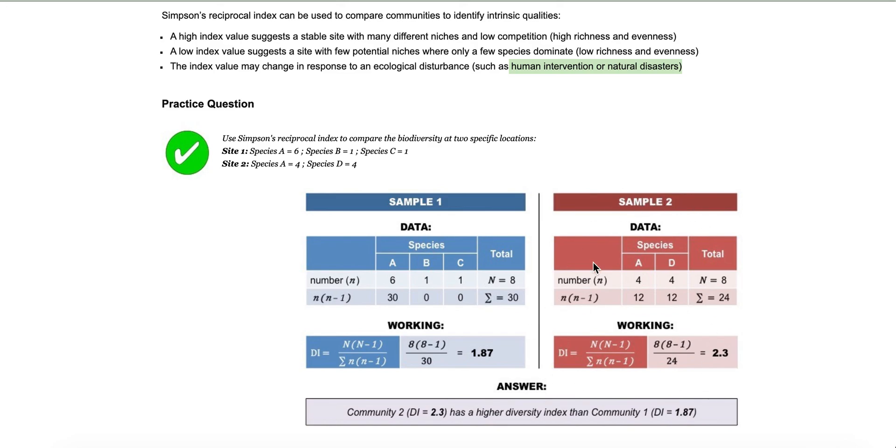We then do the same thing for the second data sample, which at site two, there were only two species, which might make you think right away that this is going to be a less diverse or more unhealthy ecosystem because it only has two species. But they do seem rather even. There were four of each of the species. So you would do the same process we did with the other one. So looking at species A, there were four. You would plug it in four minus one. That's going to be three times little n, which is four. So four times three gives you 12. You do the same thing for species D, which is going to give you the same answer because there were four.